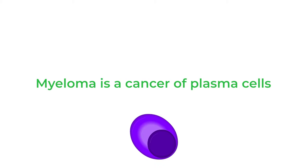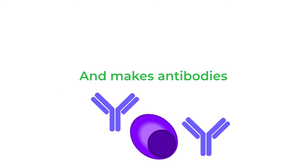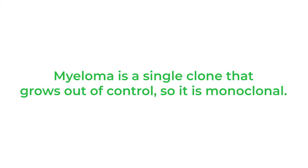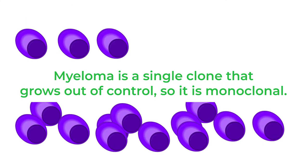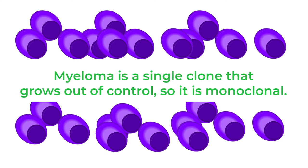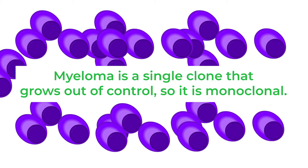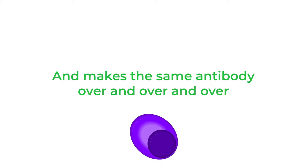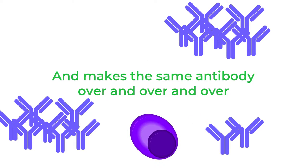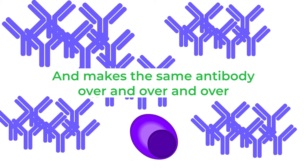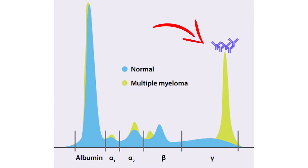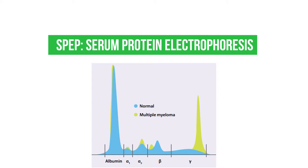Myeloma is a cancer of plasma cells, and since it is derived from plasma cells, it also makes an antibody. Myeloma is also a clonal proliferation, meaning it's a proliferation or multiplication of the same cell, or a cell derived from the same plasma cell, and it therefore makes the same kind of antibody over and over again. We detect that as a clonal spike in the blood when we run something called an electrophoresis on the blood.